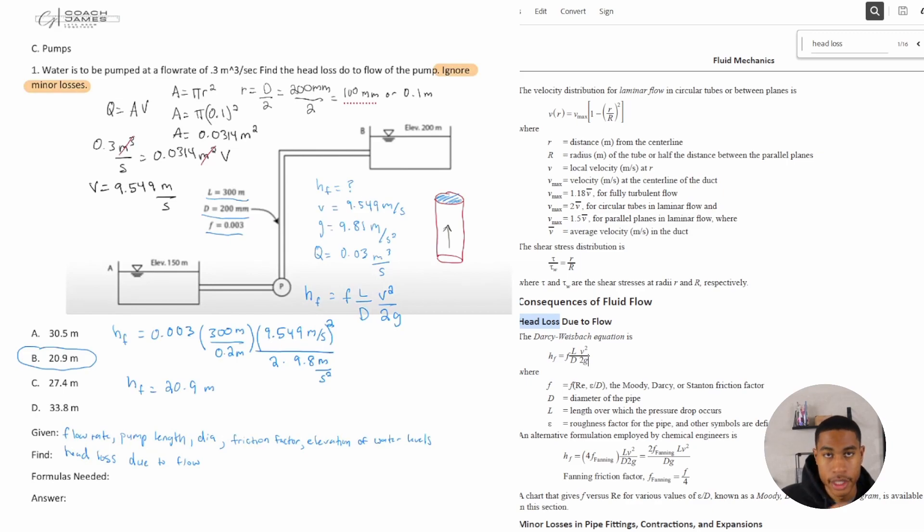Remember, if you're given flow or if you're given an area and a velocity going through a pipe, then you can get your Q which may help you in solving even more, especially for head loss. Being able to substitute for variables and take the information they give you is very crucial.